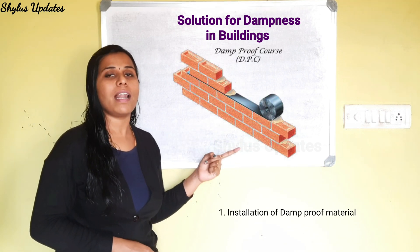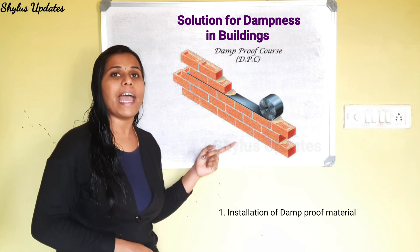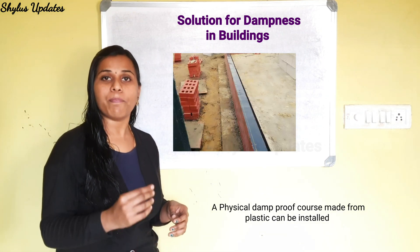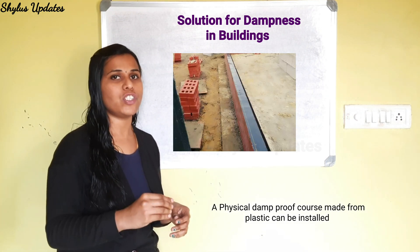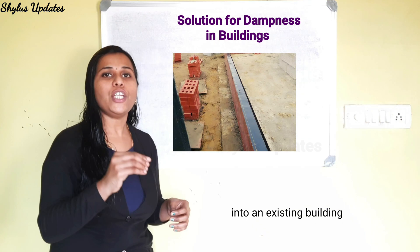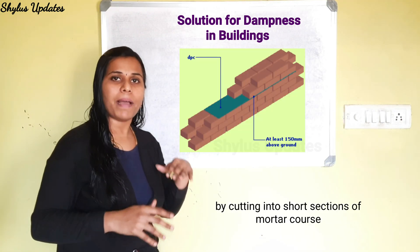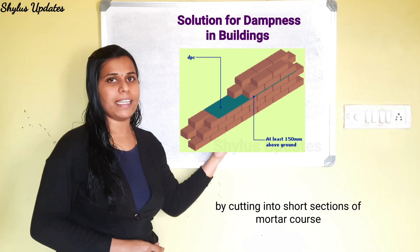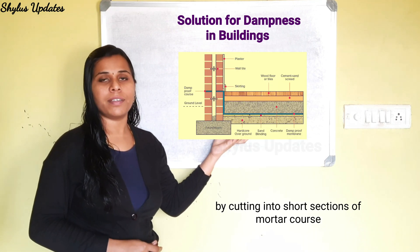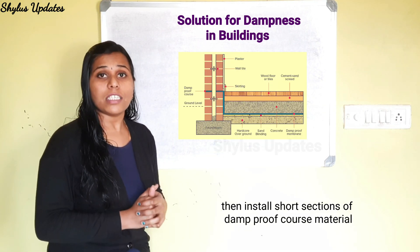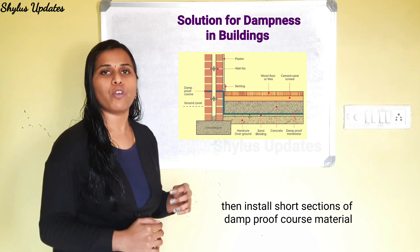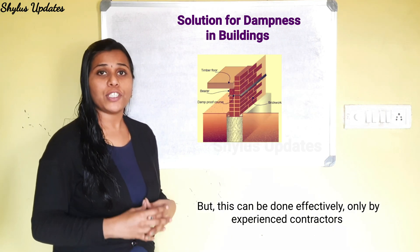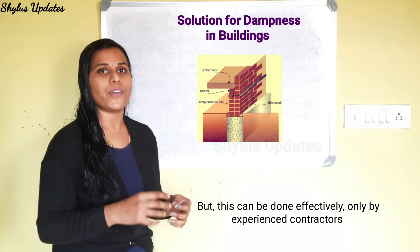Now let's see the solutions or treatments for dampness in buildings. The first one is installation of damp proof material. A physical damp proof course made from plastic can be installed into an existing building by cutting into short sections of the mortar course, as you can see in the picture. Short sections of damp proof course material are then installed, but this can be done effectively only by experienced contractors.